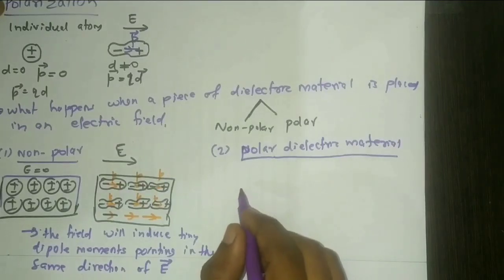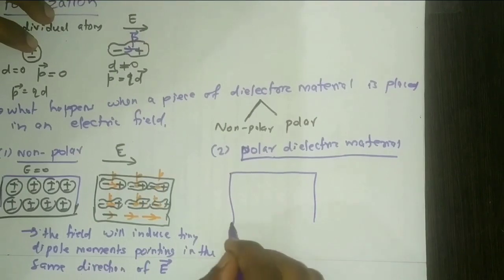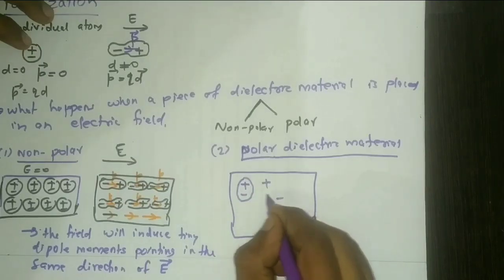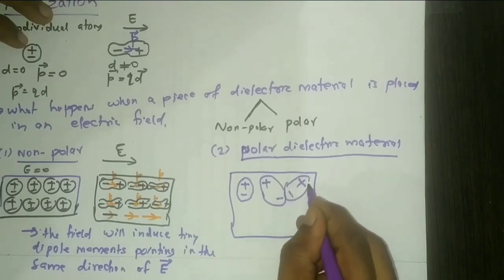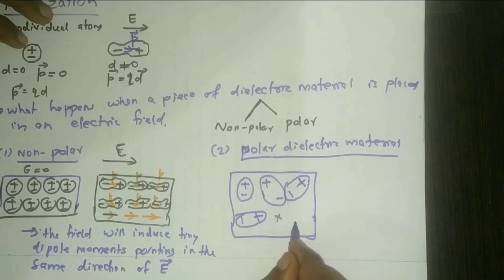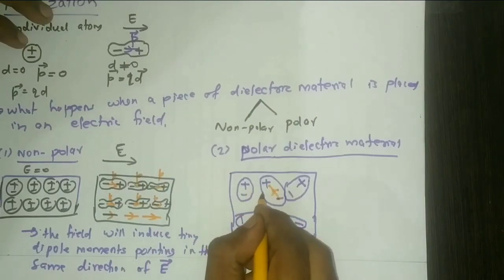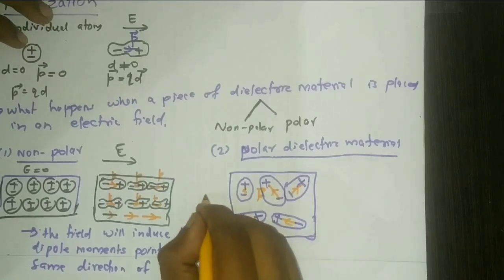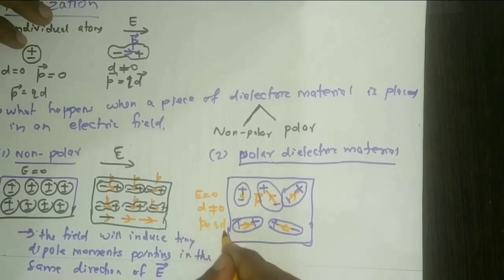The polar dielectric material has permanent dipole moment even in the absence of the electric field. There will be a charge separation — D will be present. Each molecule has a dipole moment P equal to Q into D.